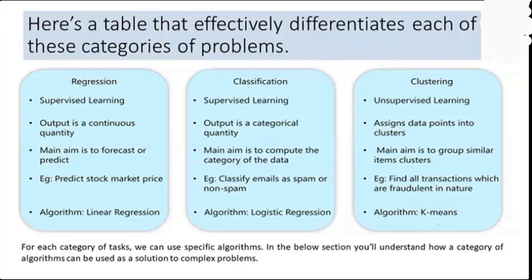For example, you might have heard about clustering of subjects or clustering of universities. In that case, they are grouping similar things together. In case of clustering universities, they cannot simply group technical and non-technical universities. Instead, what they are doing is identifying institutes of the same level.